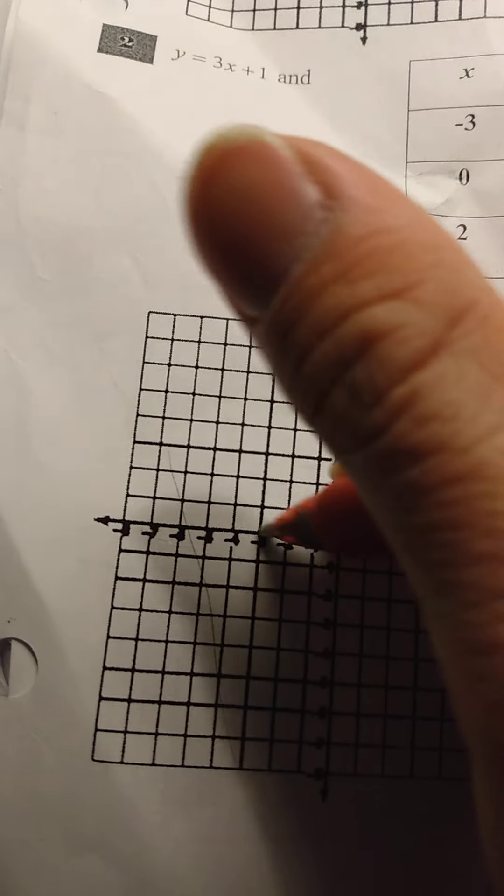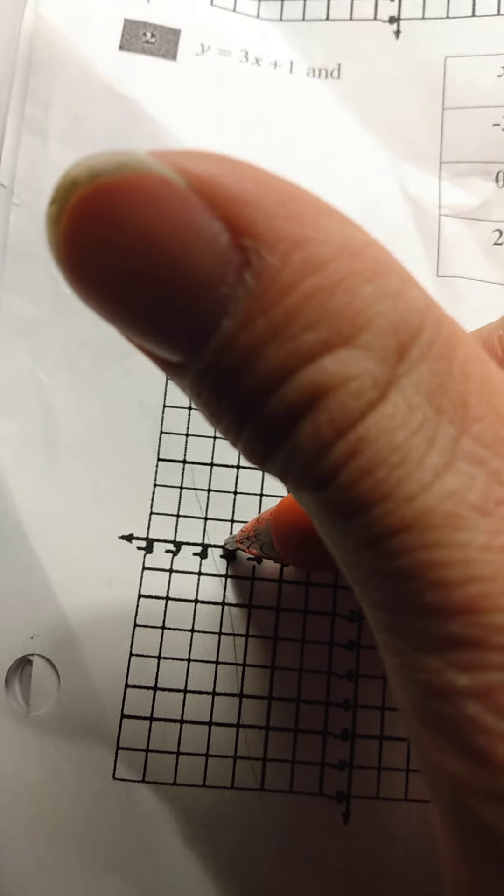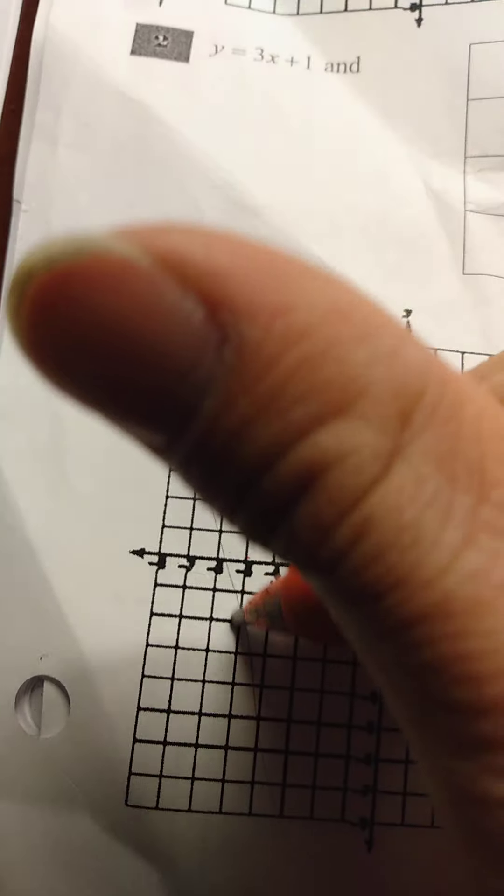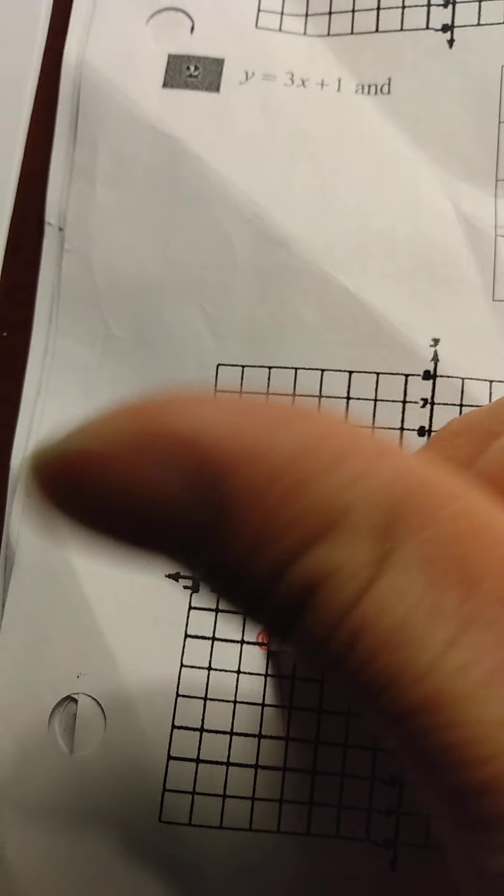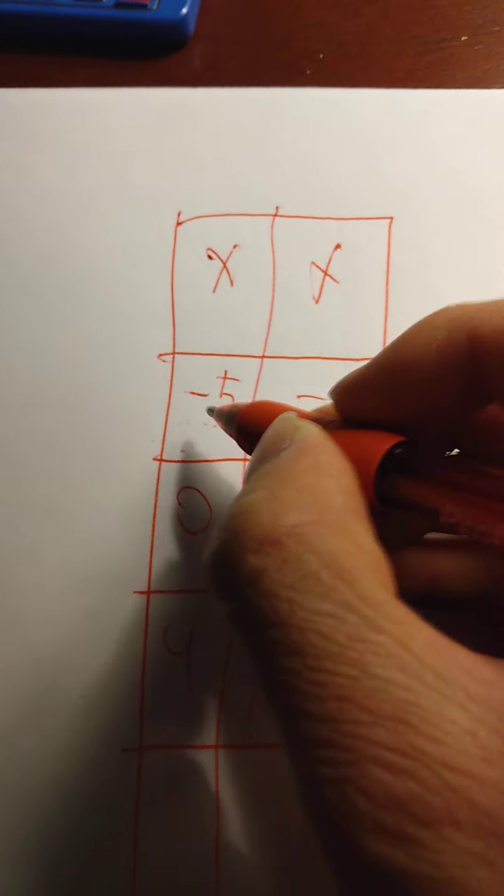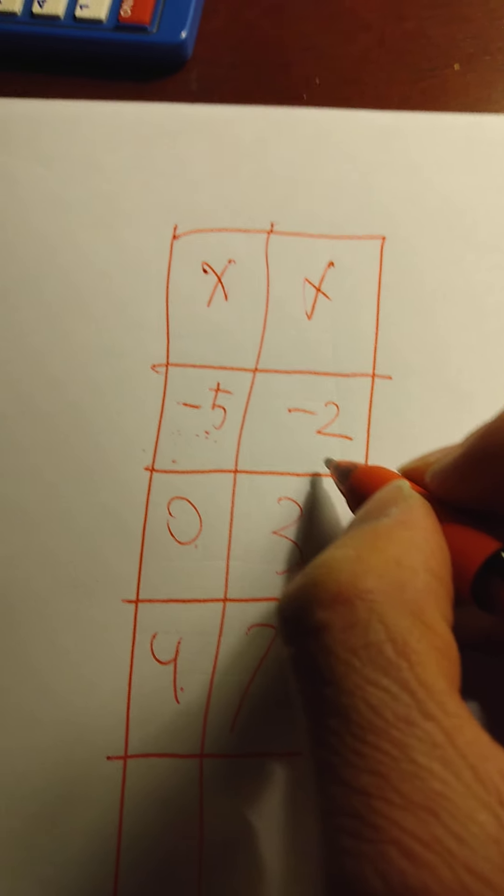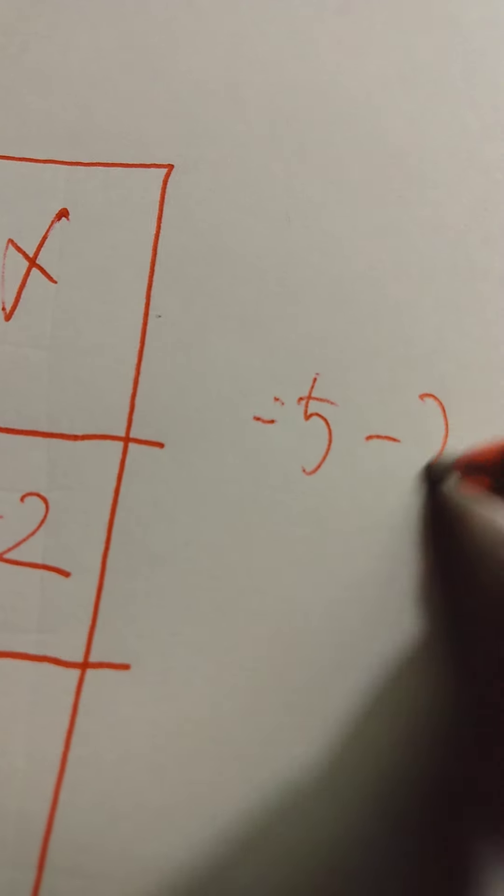Here's 0 here. Here's negative 5 right here. And here's negative 2 right here. So this would be negative 5, negative 2. Or as a point, negative 5, negative 2.